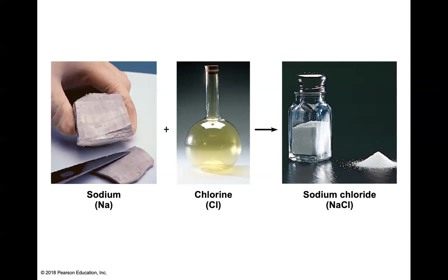When we look at chemical elements on the periodic table, we can identify them based on their chemical symbol or abbreviation. As you continue through this course you'll become familiar with these chemical symbols. The chemical symbol for sodium is Na, and the chemical symbol for chlorine is Cl. This newly formed compound, sodium chloride, is indicated by NaCl. We've all seen or used table salt at some point in our lives.